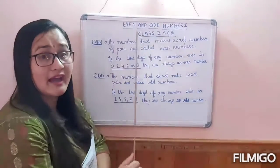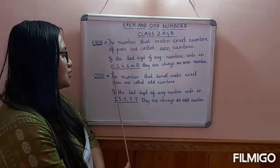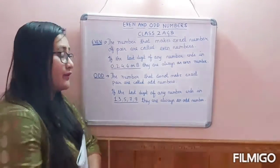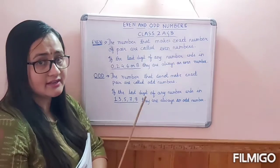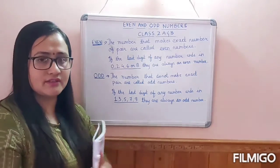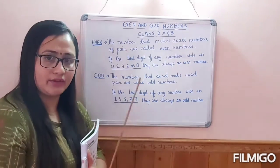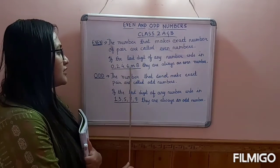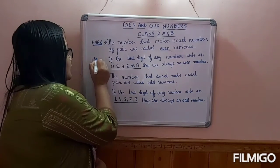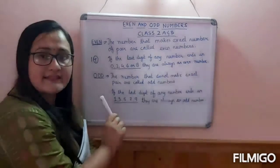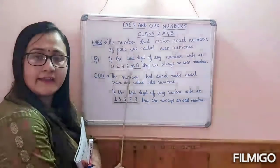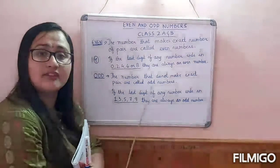If the last digit of any number ends in 0, 2, 4, 6, or 8, it is always an even number. So always keep that in mind — this is very important. Whether it is a single digit or multiple digits, if the number is ending with 0, 2, 4, 6, or 8, it is an even number. For example, 14 is ending with 4, so it is an even number. Similarly, 12 ending with 2 is also an even number. 16 ending with 6 is also an even number. And 18 ending with 8 is also an even number.